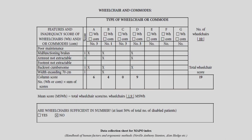Let us move to the next part where we calculate the wheelchair score — the mean score. We can have categories A, B, C, D, E, F, G of wheelchairs; if you have more than that you repeat. This format is uniform throughout the tool — for wheelchair factor, lifting factor, and environmental factor. The features and inadequacy scores of the wheelchairs or commodes present here include: poor maintenance, malfunctioning brake, armrest not extractable, footrest not extractable, backrest cumbersome, and width exceeding 70 centimeters.